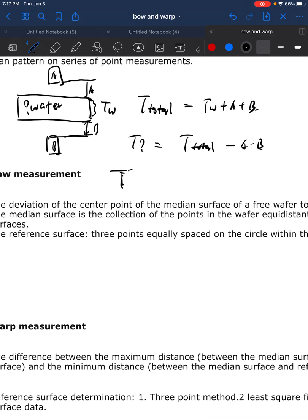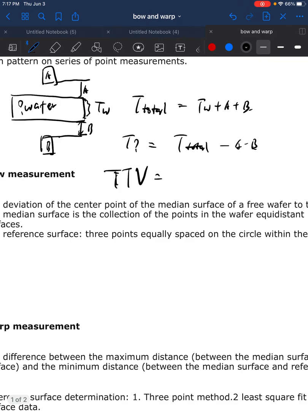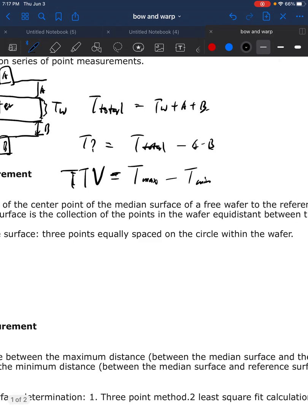The TTV total thickness variation will be simply written as T max minus T min. So let's say the maximum thickness is 1.5, the minimum thickness is 0.7, then the TTV will be 0.8.